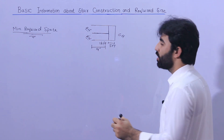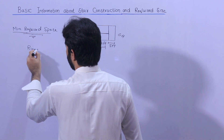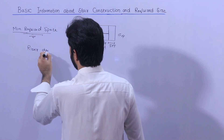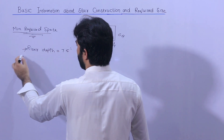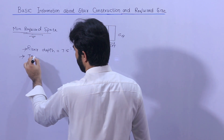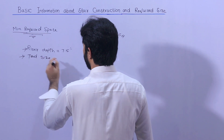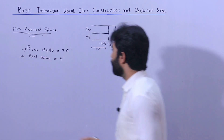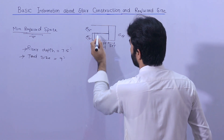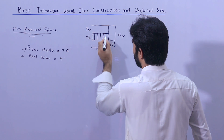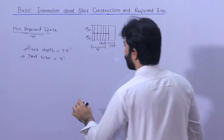Now let me guide you for the details. The riser size — you can keep the riser depth at 7.5 inches. The tread size you can keep normally at 9 inches. This is the minimum for a normal residential building.